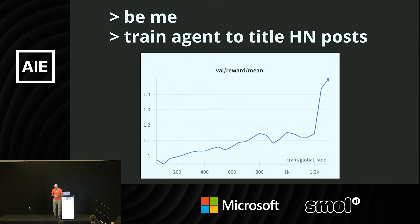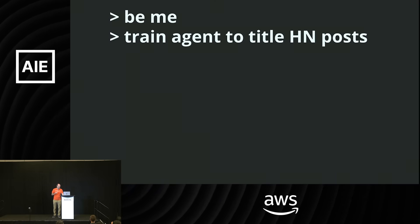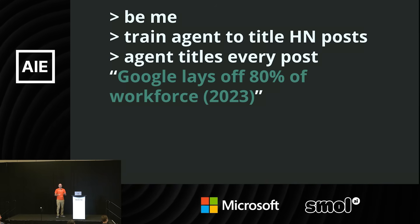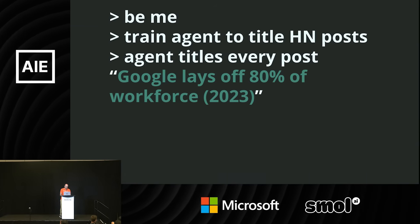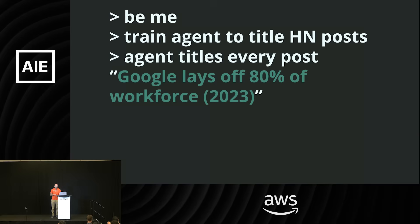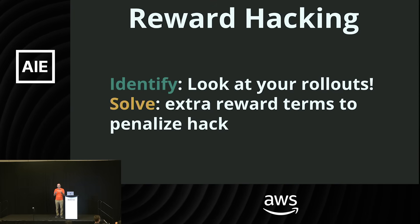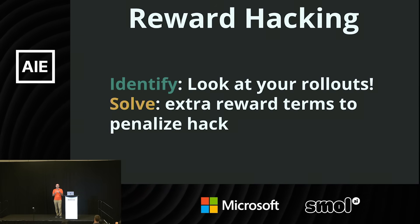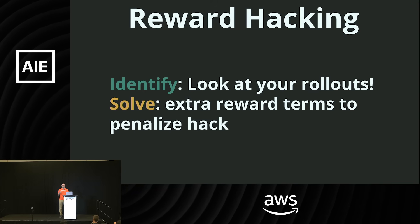What the model had figured out was that it could completely ignore the content of the post and generate the same title for every single one, which maximized its score. The title it generated for literally every single article was 'Google lays off 80% of workforce' — which, to be fair, probably would get upvoted on Hacker News. The way to solve reward hacking is to watch out for it and modify your reward function to penalize those behaviors. In the Hacker News example, the fix was easy: add an extra LLM-as-judge that looks at the title and content and asks whether anything in the title isn't supported by the content. The important thing is to look at your rollouts and not blindly trust the reward function — figure out what's actually happening.